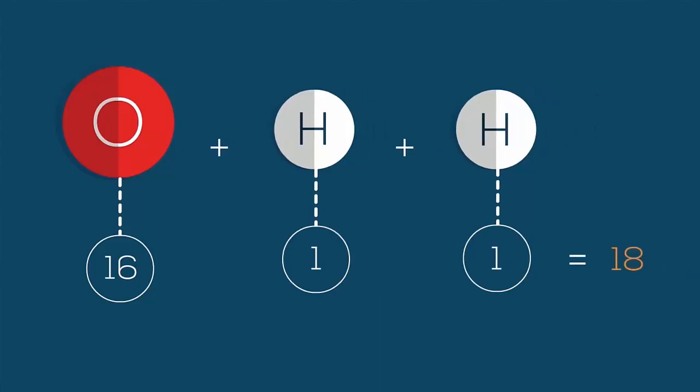This gives us a total molecular mass of 18 for the water molecule. We then divide the molecular mass of the oxygen atom, 16, by the total molecular mass, 18.